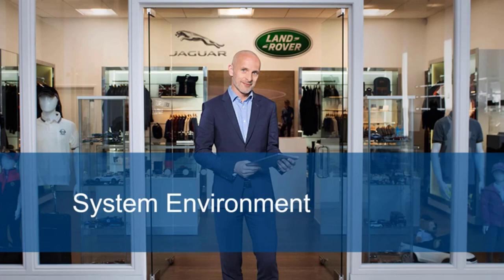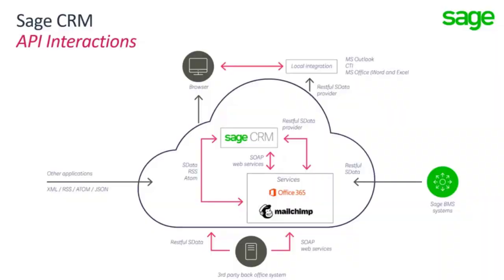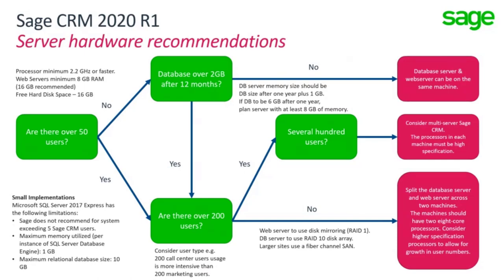When we come to the specific environment and how it's implemented, we have choices to make. Sage CRM exists in a complex environment — it interacts with integrated systems. Without focusing explicitly on Sage accounting systems, CRM nevertheless interacts with different services like Exchange, Office 365, and Mailchimp. We'll touch on some networking choices, but probably the area to consider most clearly is whether we are meeting the hardware requirements and environmental requirements for our system.